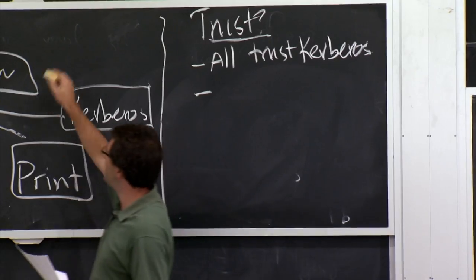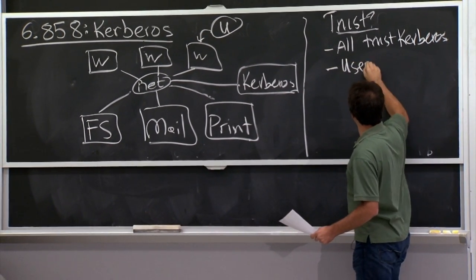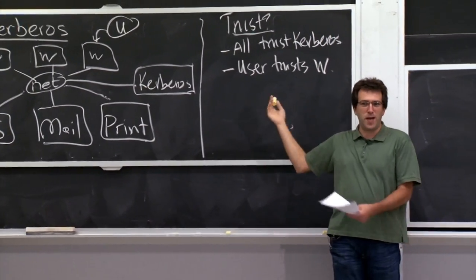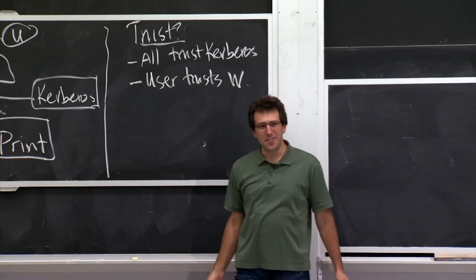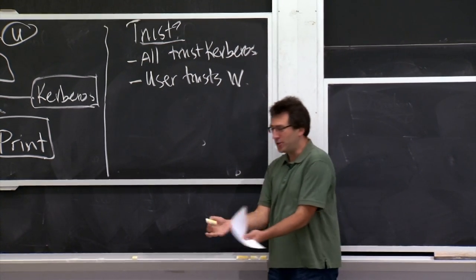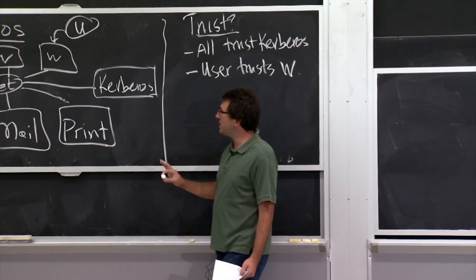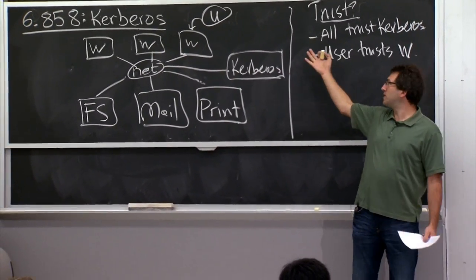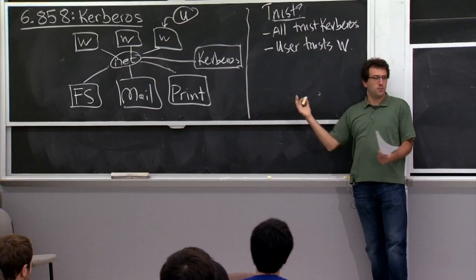The trust model in Kerberos introduces an extra Kerberos server. The network is untrusted, but all parties must trust the Kerberos server — that was an assumption the designers were willing to make. Additionally, users must trust their own workstation. If you don't trust your workstation, it can sniff your password, sniff your Kerberos ticket, or run arbitrary commands. If you have your own laptop, that's a sensible assumption; if you're using a public computer, it's more questionable.